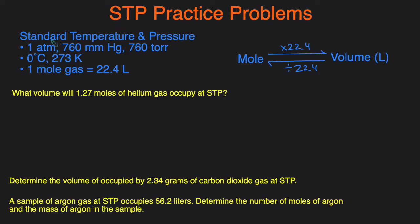So STP stands for Standard Temperature and Pressure. Standard temperature is 0 degrees Celsius or 273 degrees Kelvin, and standard pressure is 1 atm, which is also 760 millimeters mercury or 760 torr.